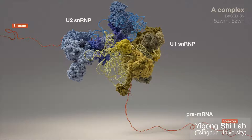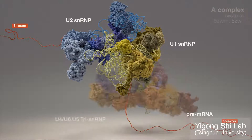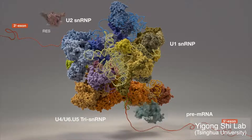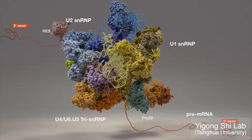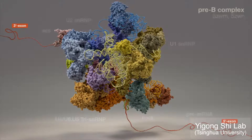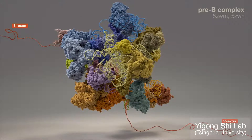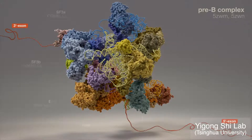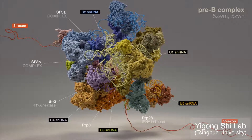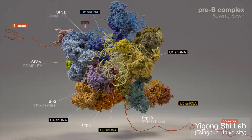Next, the tri-SNRP particle will associate with the A-complex, followed by RNA helicase PRP28 and the RES complex, which begins to function to stabilize the pre-mRNA. Forming a suitably inclusive cluster, the pre-B complex's relaxed interfaces between proteins and RNAs may facilitate remodeling in subsequent steps, enabling local coordination of pre-mRNA splice site reactants and concomitant construction of the active site.